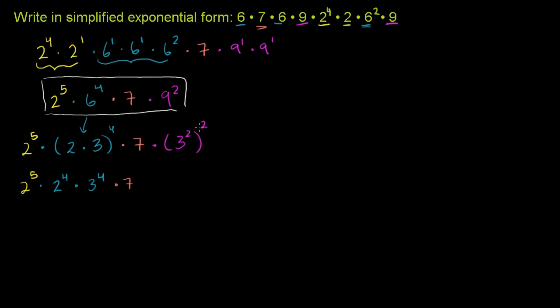And then you have times 3 squared, but you have 3 squared and then that squared, so it's going to be 3 to the 2 times 2 power, so times 3 to the 4th. So now we have more bases we can merge. We have these 2's here: 2 to the 5th times 2 to the 4th. What's that? Well, that's 2 to the 5 plus 4, that's 2 to the 9th power.